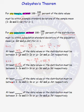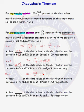At least what percentage of the data values or distribution must lie within four standard deviations of the mean? k equals 4, so we need to figure out 100 minus 100 over 16. That equals 93.75. So at least 93.8 percent of the data values or the distribution must lie within four standard deviations of the mean.